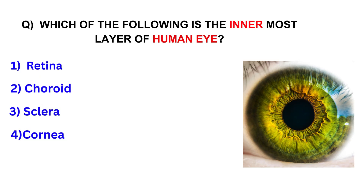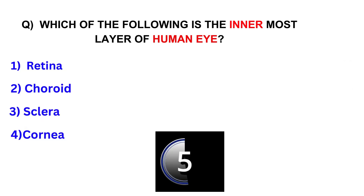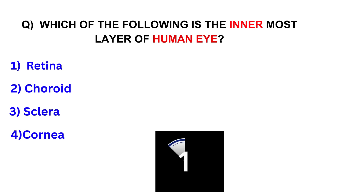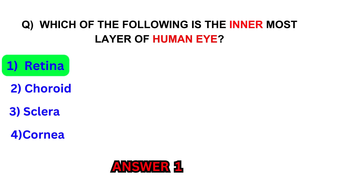Which of the following is the innermost layer of the human eye? Retina, choroid, sclera, or cornea. Answer: Retina.